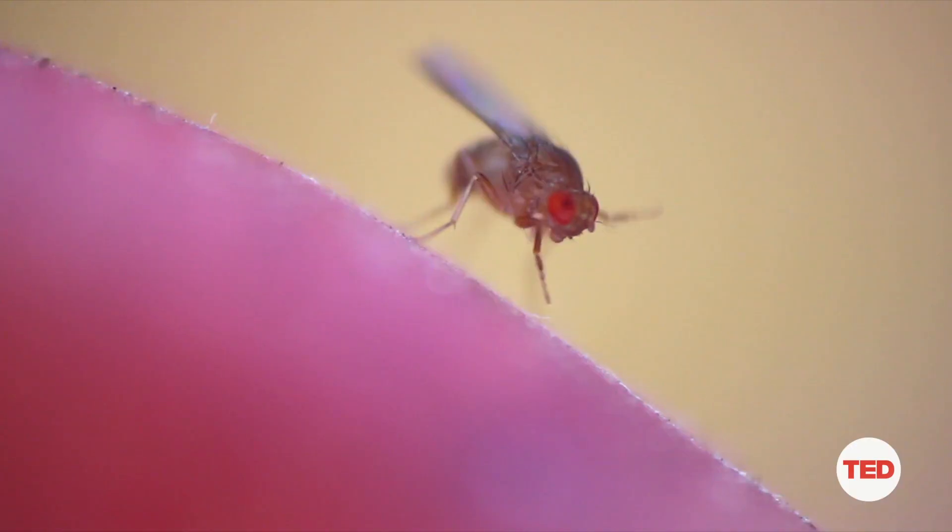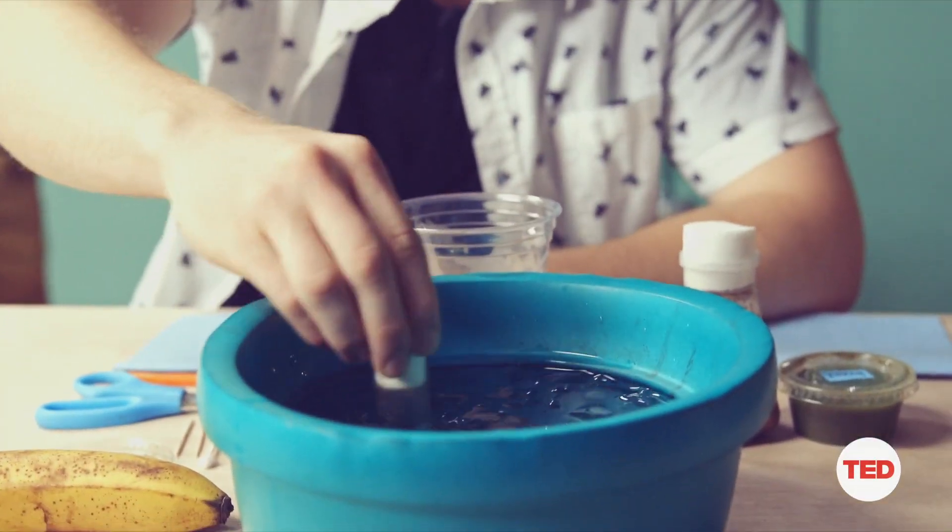But before we try to manipulate their taste preferences, we need to establish what is the baseline of a fruit fly, what does it prefer. We call this a control experiment, and Spencer's been hard at work doing this.